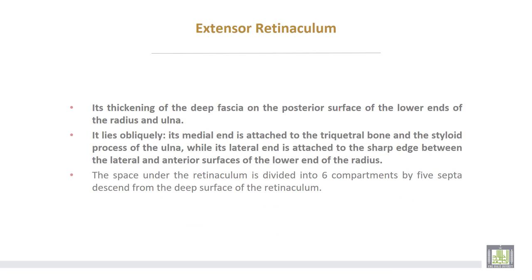Then the extensor retinaculum. It is a thickening of the deep fascia on the posterior surface of the lower ends of both radius and ulna. It lies obliquely. Its medial end is attached to the triquetral bone and the styloid process of the ulna, while its lateral end is attached to the sharp edge between the lateral and anterior surface of the lower end of the radius. The space under the retinaculum is subdivided into six compartments by five septa descending from the deep surface of the retinaculum.